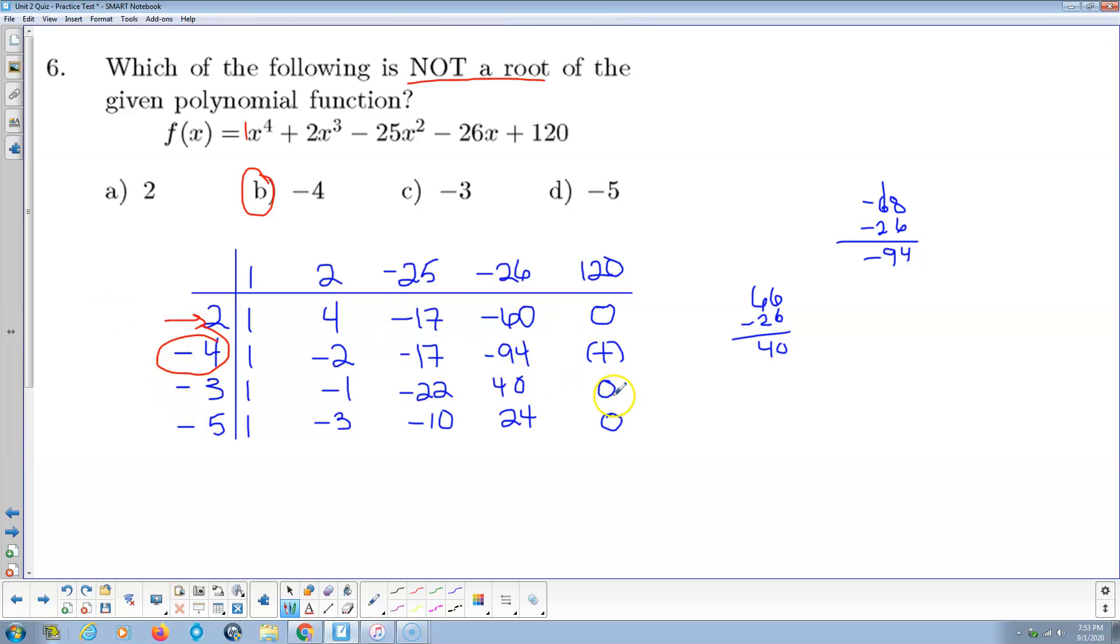We put negative 3 in, we get 0 for a root. Negative 3 is a root, not a factor, a root here. So x minus 2 would be the factor that goes with that root. But 2 is the root. Put negative 5 in, we get 0 here, so negative 5 is a root. We put negative 4 in, and we get some big positive number.